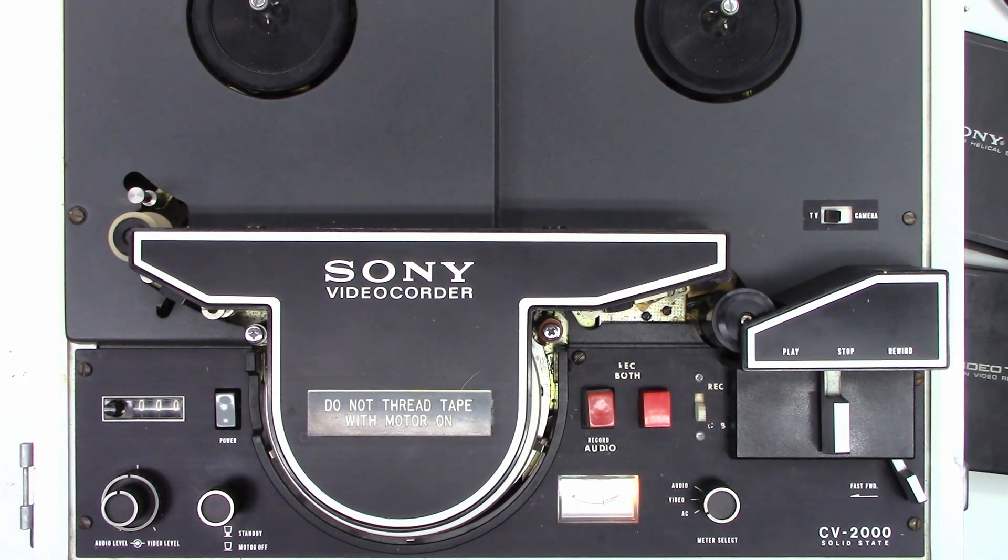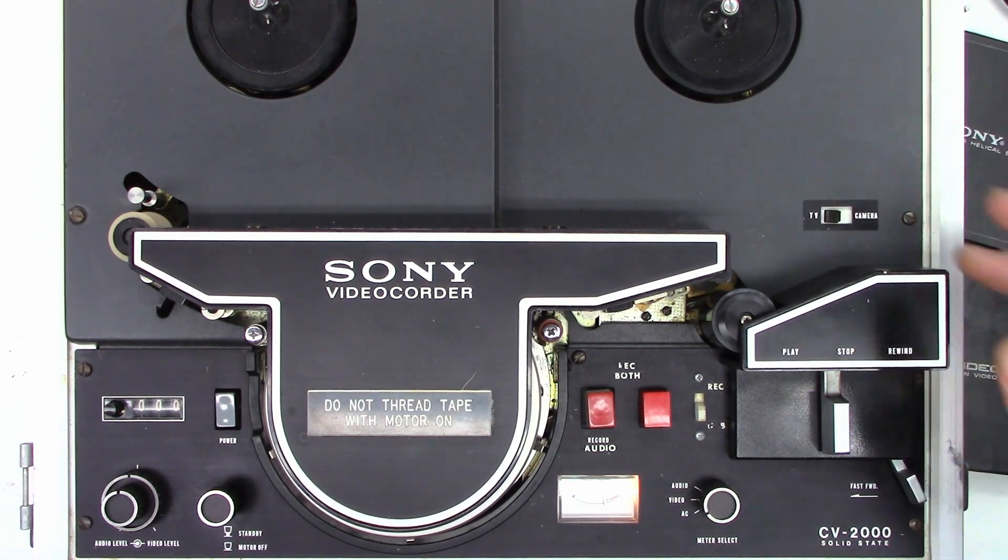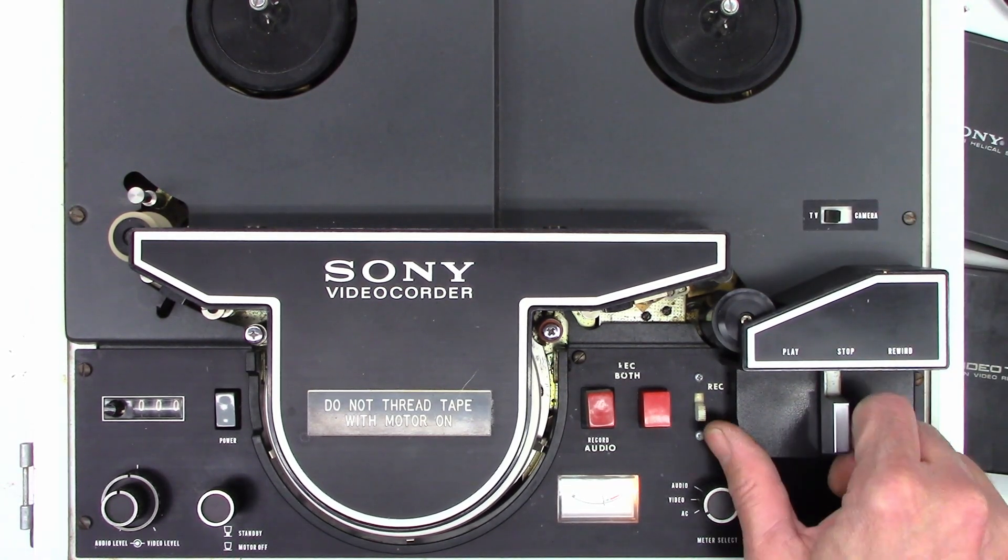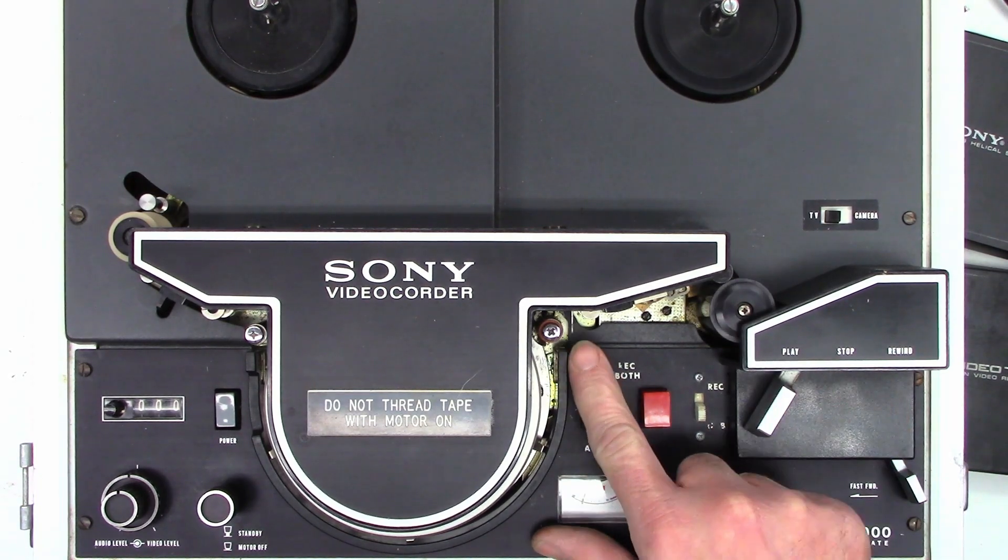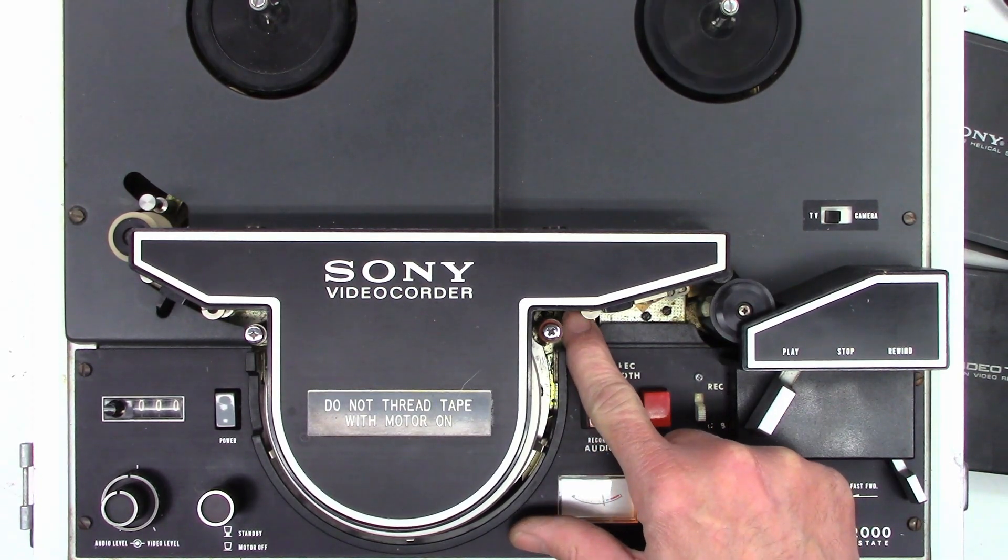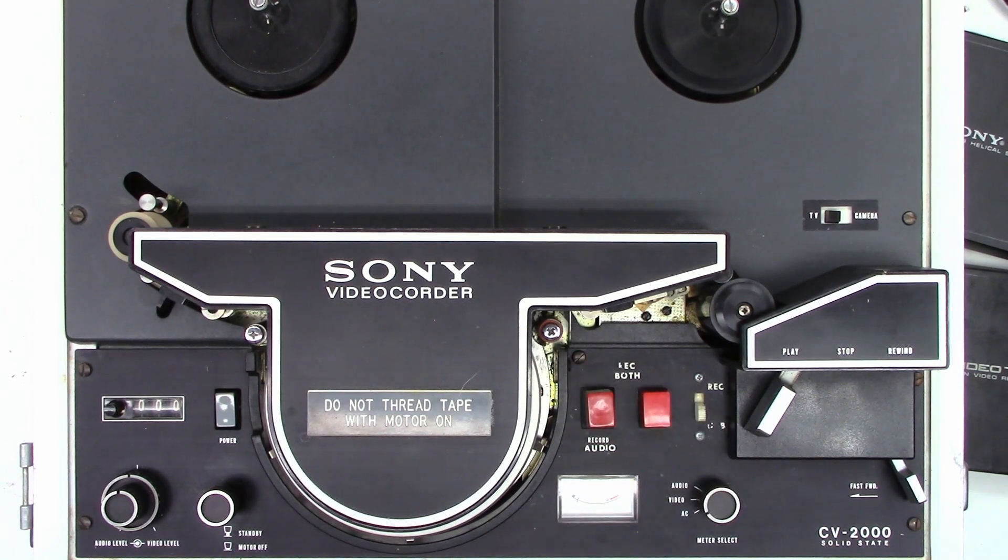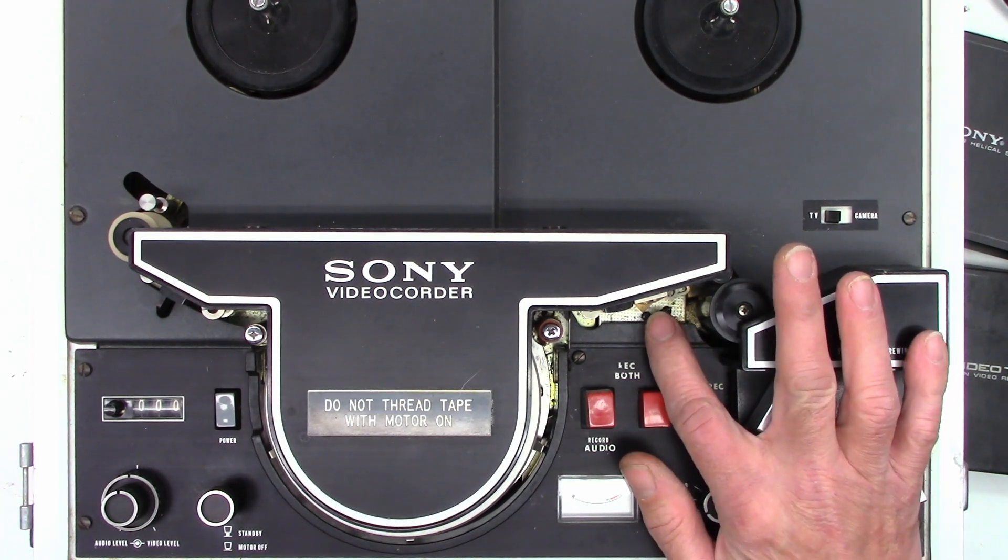It is in the play position - there is the stop position. I did engage the motor. The capstan is turning. I did try to run it and it has this auto-stop switch right there. When it detects that the tape has run out, it will shut the unit off. Sounds like it might need a little bit of oil in there as well.